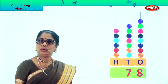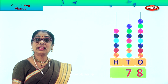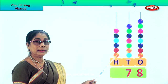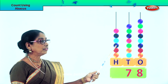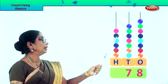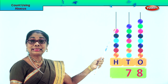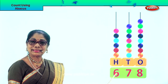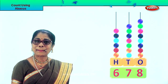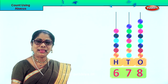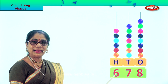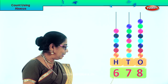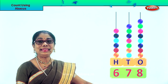Now we count the beads on the 100s place. Count in 100s: 100, 200, 300, 400, 500, 600. There are 6 beads — we put down 6, that is 600. Now we read the number: 678.